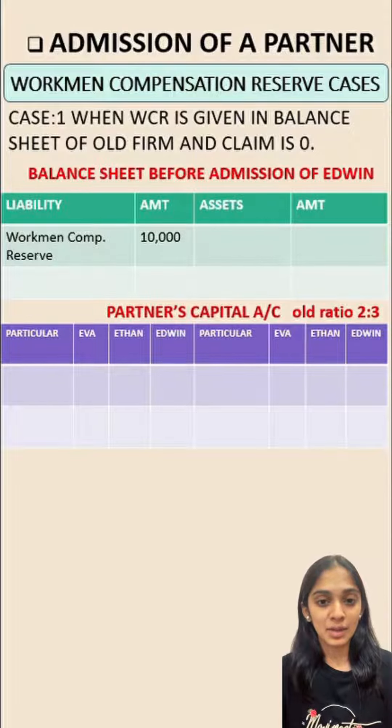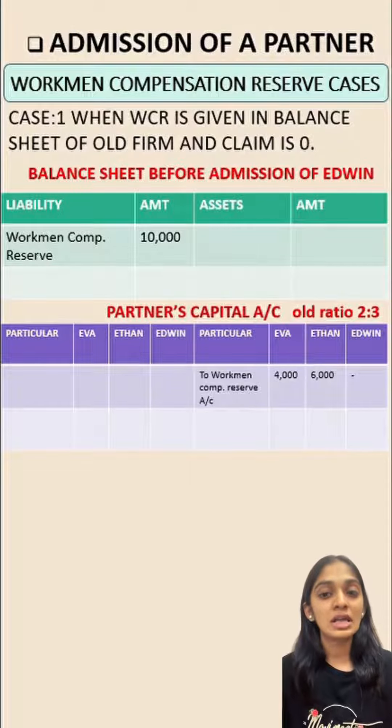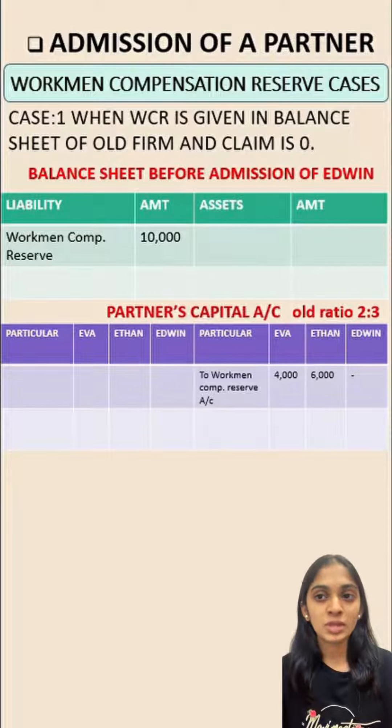In the partners capital account on the credit side, we write workman compensation reserve. Eva got 4,000 and Ethan got 6,000.